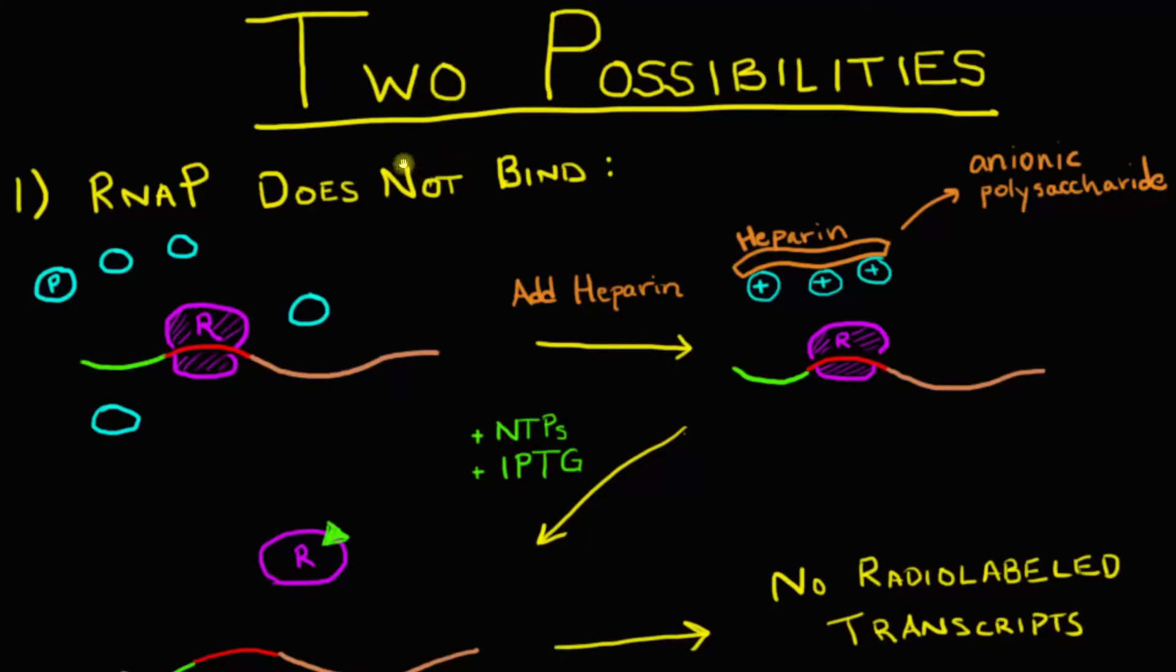The first possibility is that RNA polymerase does not bind. In this situation, RNA polymerase is going to be floating around in solution, but the repressor will block binding. What we can do next is we can add in heparin, and heparin is an anionic polysaccharide. So that basically means that it has a bunch of negative charges on it.